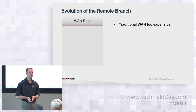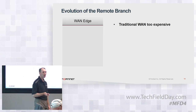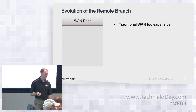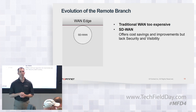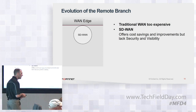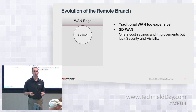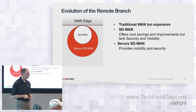When we look at the evolution of the branch, customers have started looking at their WAN edge and getting frustrated, particularly as they move to more SaaS services going straight to the internet. Their traditional WAN is too expensive and they're starting to look at SD-WAN. SD-WAN is a very hot topic, and it offers a lot of good cost savings and improvements. One struggle is that SD-WAN by itself doesn't really have a lot of security or visibility, particularly now that there's a direct connection to the internet — that's why Fortinet is talking about secure SD-WAN.